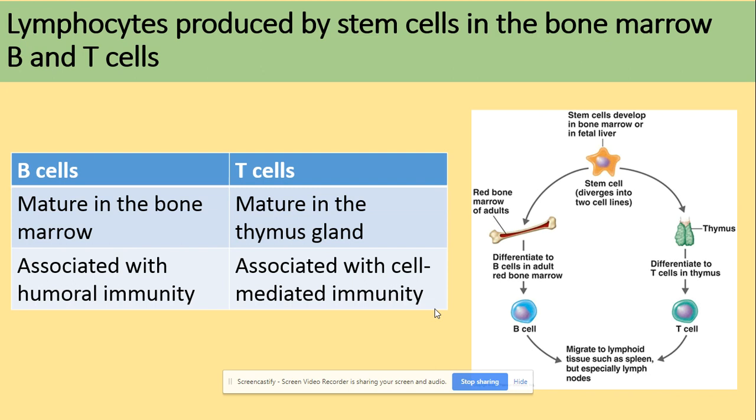B cells are involved in humoral immunity and T cells in cell-mediated immunity. It is quite important you know what cells are involved in what type of immunity, because the examiner might ask you to describe the function of B cells or describe humoral immunity, so you must be aware of those two facts.